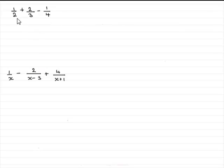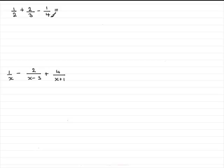In this example we've got a half plus two thirds take away a quarter. To do that, I'd want to change them into the same fraction. We choose preferably the lowest number that the denominators two, three, and four go into. The LCM of two, three, and four is going to be 12, so we can change them all into twelfths.